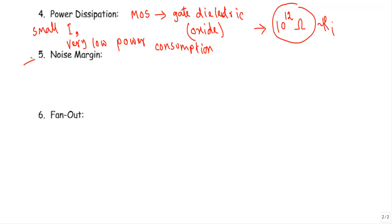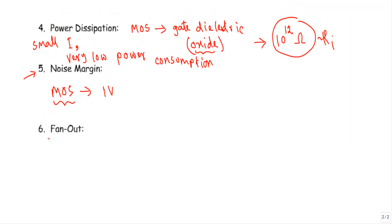The fifth characteristic is noise margin, which indicates the capability of a logic family to withstand noise. The noise margin of MOS logic circuits is around one volt, meaning MOS logic circuits can withstand any noise voltage of one volt or less.